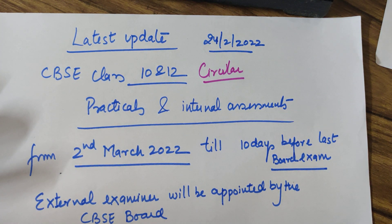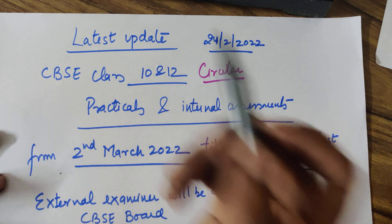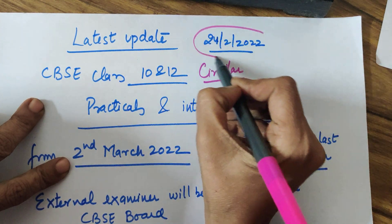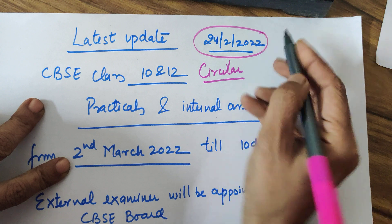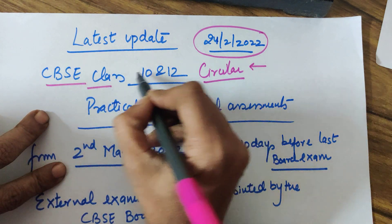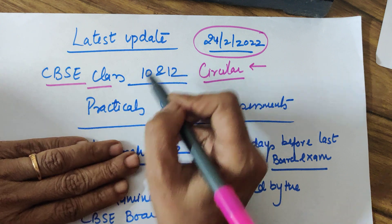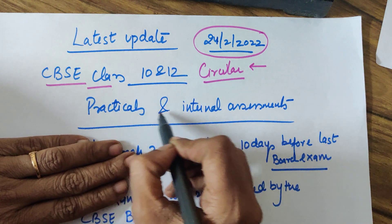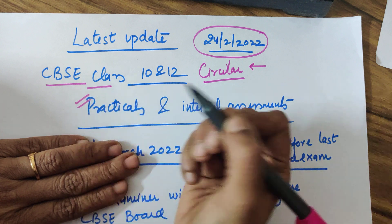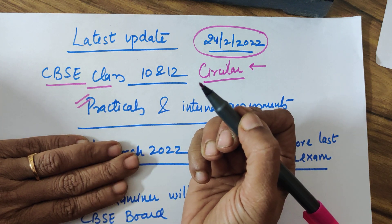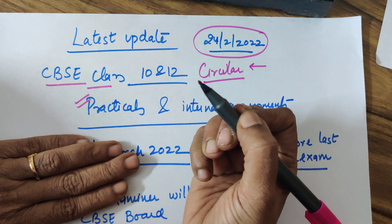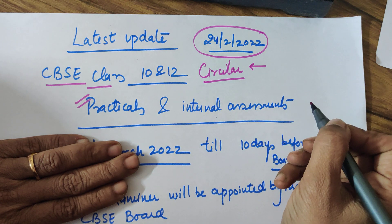Good evening Class 10th and 12th. I am back with the latest update. As of today, a circular has been released by the CBSE for Class 10th and 12th. This relates to your practicals and internal assessments. Practicals are for science, commerce, as well as humanities students of Class 12th, while internal assessment is in virtually all subjects other than the practical examination.